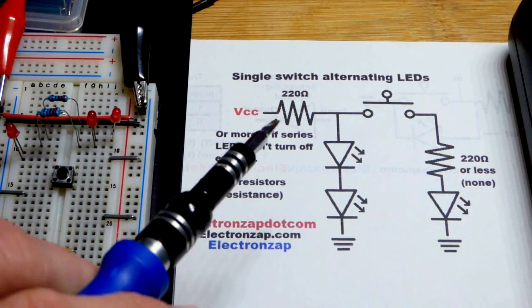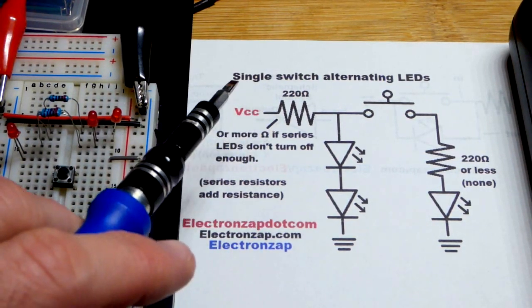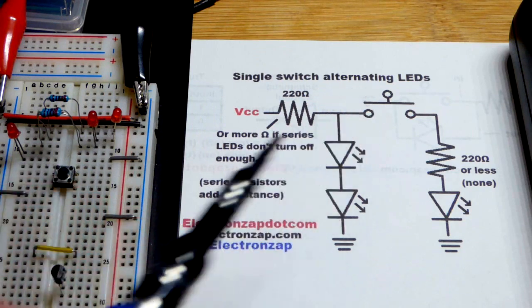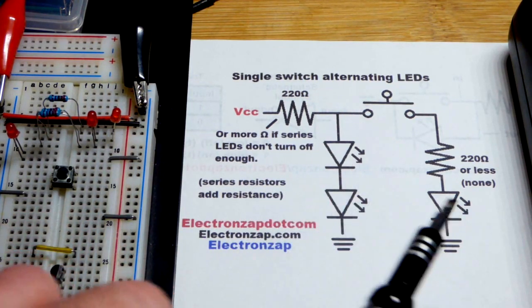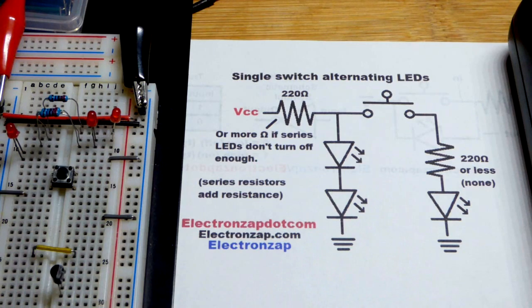So now in this video, we're going to look at this circuit here really quickly. We're going to use a single switch, a push button switch in this case, to alternate which LEDs are flashing.